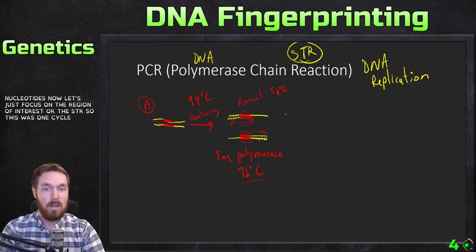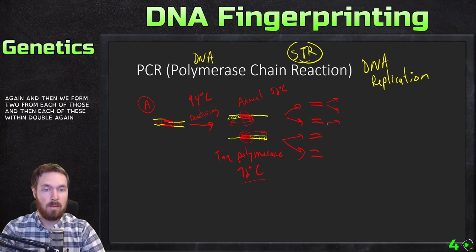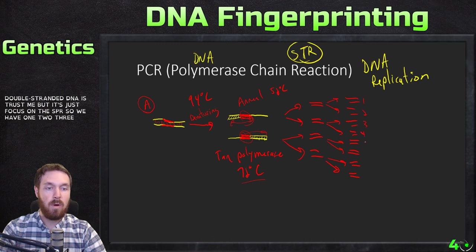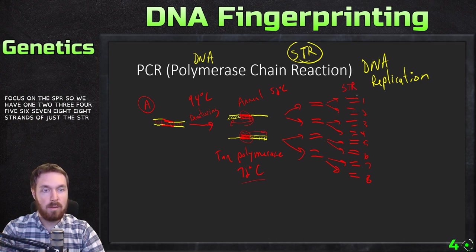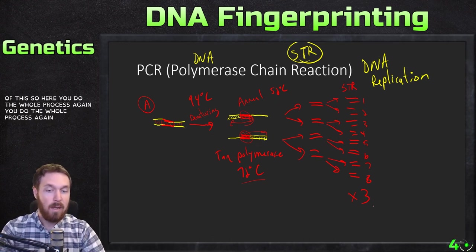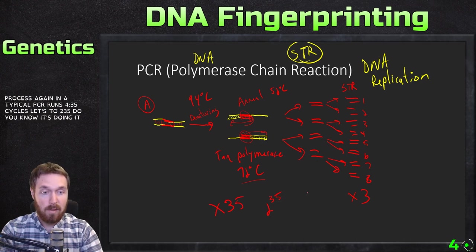That was one cycle. Each copy then goes again, forming two from each, and those double again — so after three cycles you have eight strands of just the STR. You do this whole process again and again. A typical PCR runs for 35 cycles — that's 2 to the 35, meaning billions of copies of just this one STR.